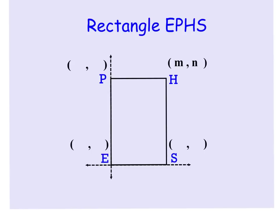We're going to use the fact that we're given this point is M,N. And so with that, we know that the distance from here to here has to be M units, and the distance from here to here has to be N units.